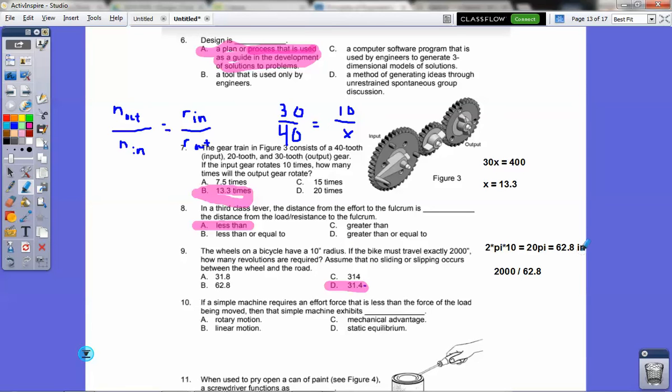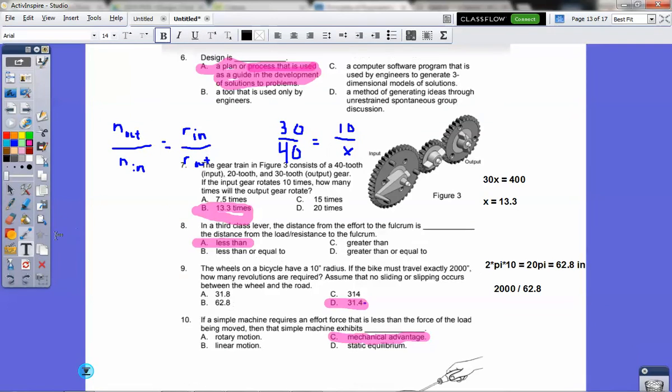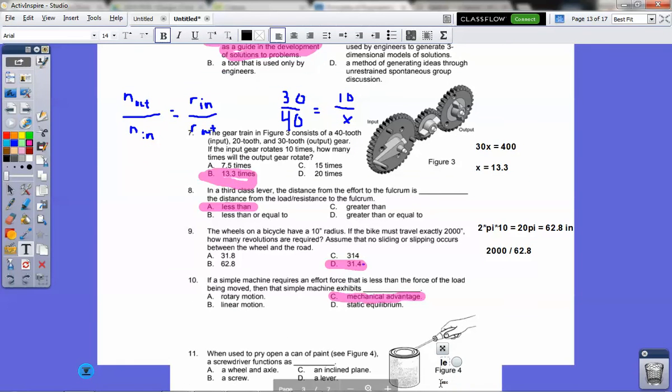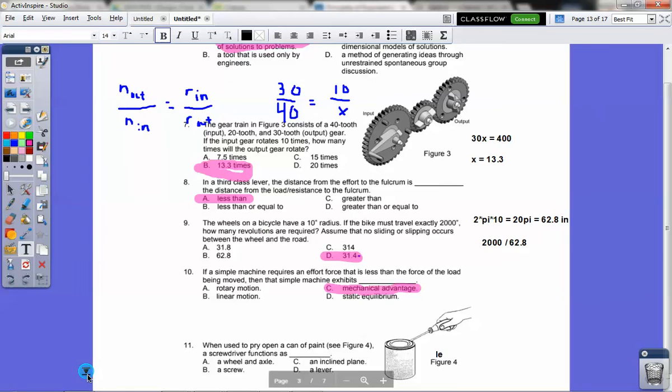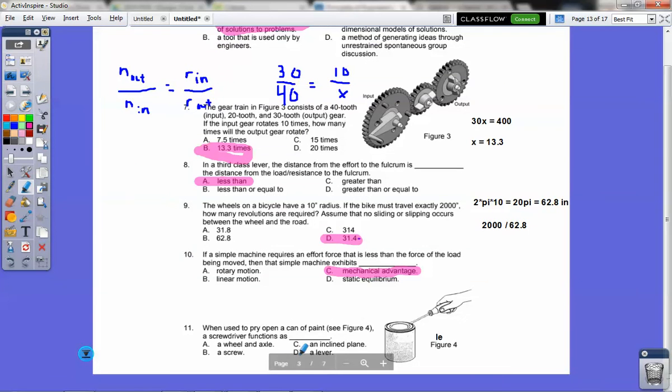Number 10. If a simple machine requires effort forces less than the force of the load being moved, the simple machine exhibits mechanical advantage. Question number 11 is just a straight up, what kind of simple machine are you utilizing here if you use a screwdriver to pry open a can of paint? By doing that, you're using a lever to do that. The choice there would be a lever, it's choice D.